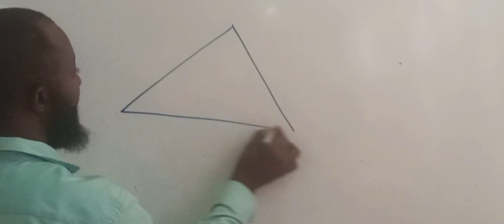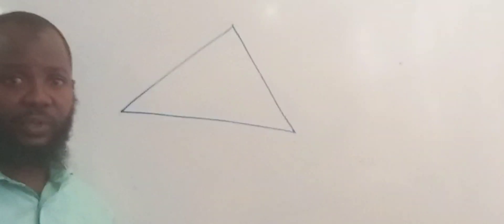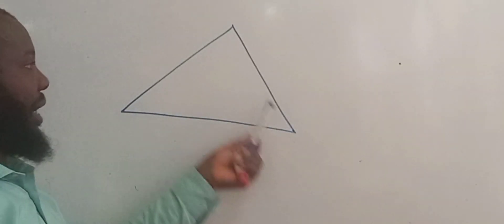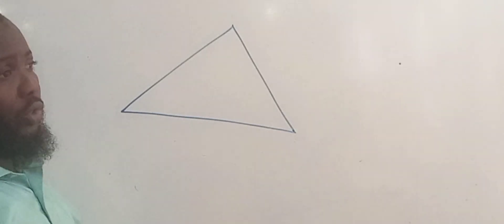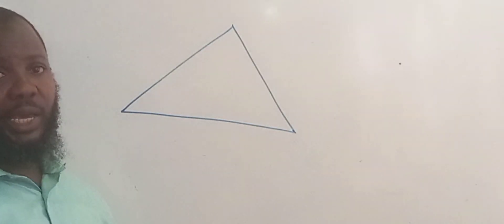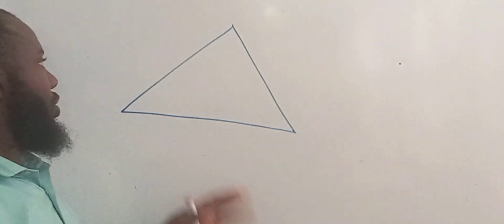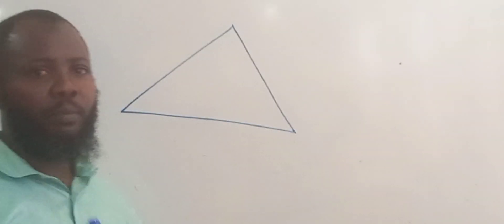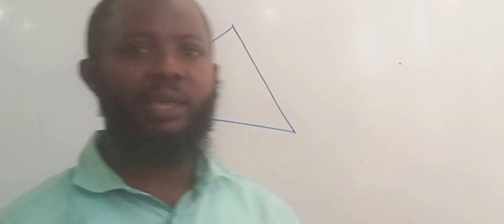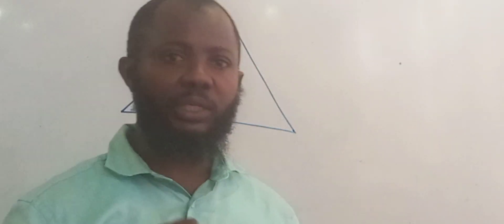A polygon has at least three sides, with a minimum of three sides and three angles. We can have four angles and four sides, five angles and five sides, and so on. The name of the polygon determines the number of sides and the number of angles it has.